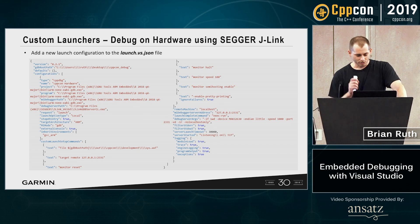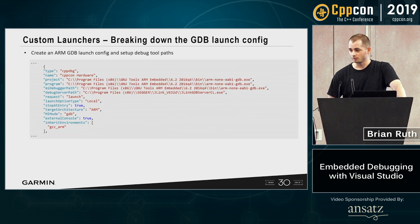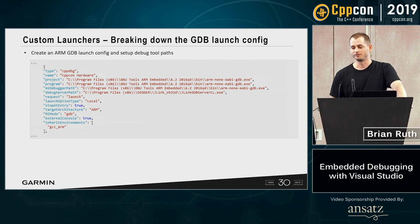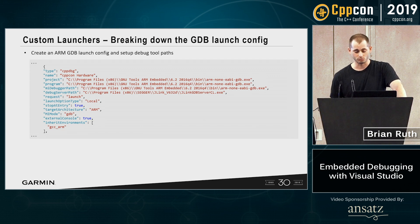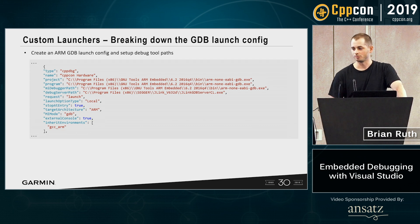We're going to do debugging using a SEGGER J-Link debugger. First, we need to create the launch configuration: tell it where the ARM GDB is, tell it what we're using as a compiler, tell it where the J-Link server is. We're going to call this configuration "launch CppCon hardware".